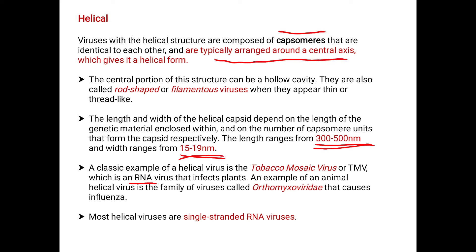The length and width of a helical capsid depends on the length of the genetic material enclosed within and the number of capsomer units forming the capsid. The length ranges from 300 to 500 nanometers and the width from 15 to 19 nanometers. A classic example is TMV — tobacco mosaic virus — which is an RNA virus that infects plants. An example for animal helical viruses is the family Orthomyxoviridae, which causes influenza. Most helical viruses are single-stranded RNA viruses.